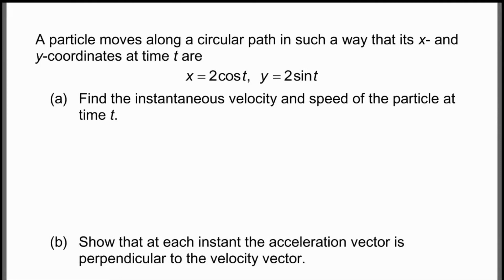To start with, we'll go back to things we were looking at when we were dealing with two-dimensional motion. We have a particle moving along a circular path where its x and y coordinates at time t are x = 2cos(t) and y = 2sin(t). They ask us to find the instantaneous velocity and speed of the particle at time t.